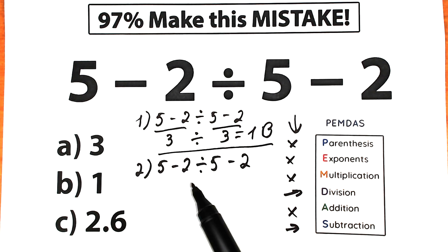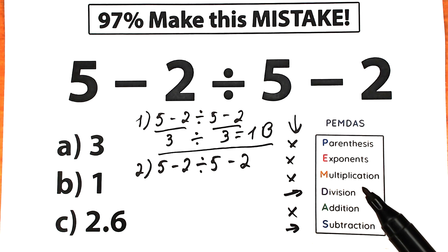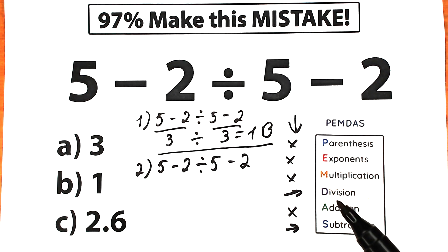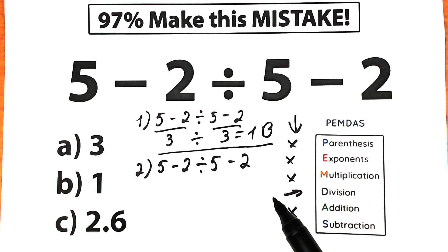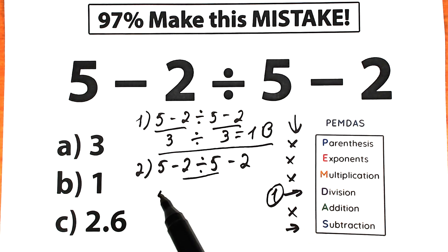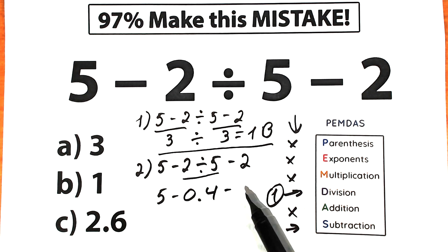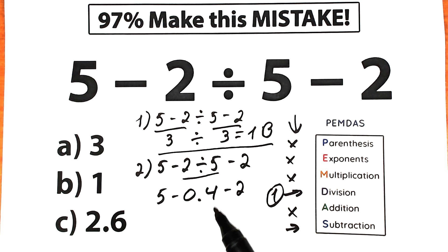What should we do first — subtract or divide? As I said, PEMDAS works from top to bottom, so higher position means higher priority. Division has a higher position than subtraction, meaning division has higher priority. So our first step is division: 2 divided by 5 equals 0.4. Now we have 5 minus 0.4 minus 2.